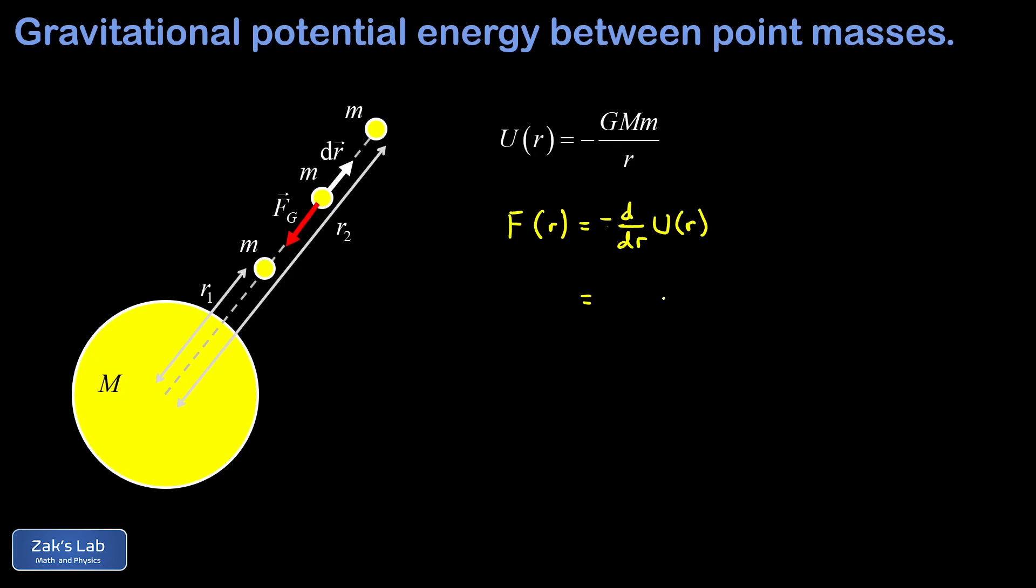So then I sub in my potential energy function, but notice the potential energy function comes with a minus sign. So that's going to cancel the minus sign that's hanging out in front of this derivative. So what I want to find is the R derivative of G big M little m over R.